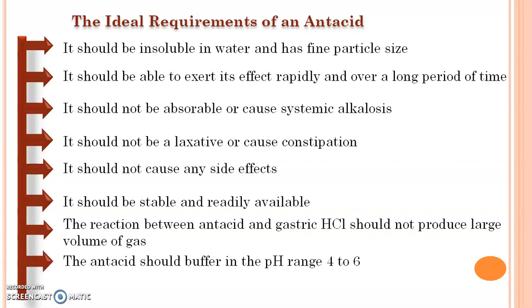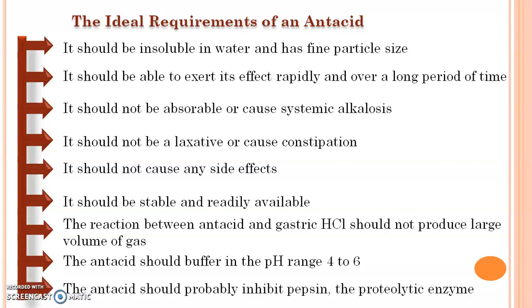The reaction between antacid and gastric hydrochloric acid should not produce large volume of gas. The antacid should buffer in the pH range 4 to 6. And lastly, the antacid should probably inhibit pepsin, which is the proteolytic enzyme.